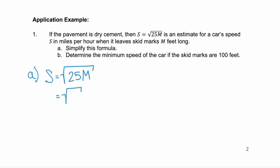We can break that apart into the square root of 25 times the square root of m. Since 25 is a perfect square, we can calculate that — it's 5. And then the square root of m — we don't know m, so it stays as the square root of m. So we've simplified the formula to s equals 5 times the square root of m.